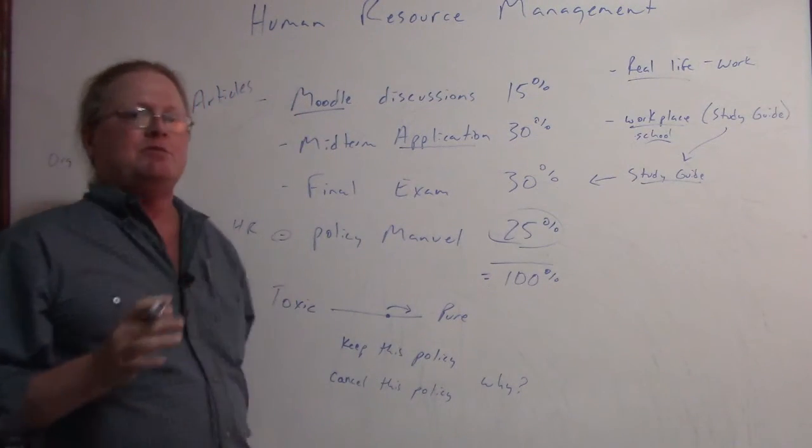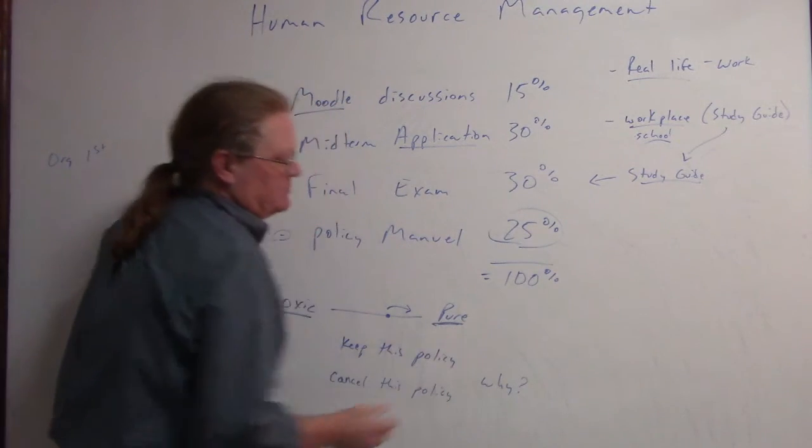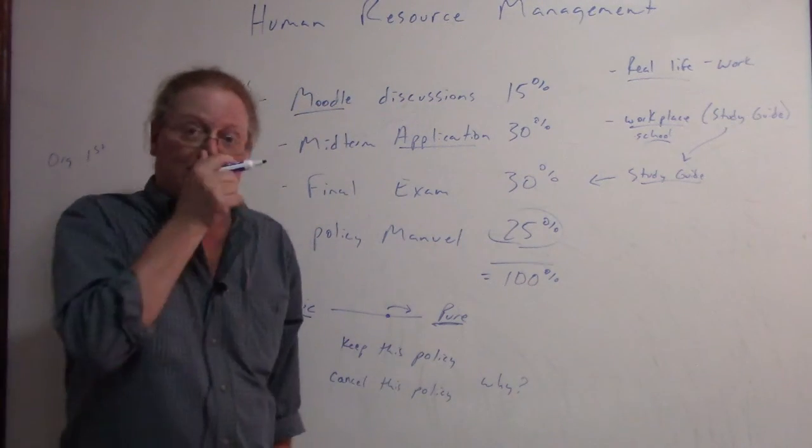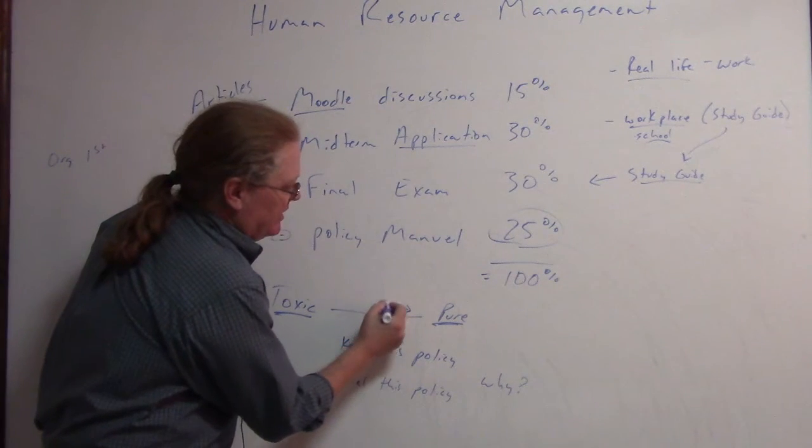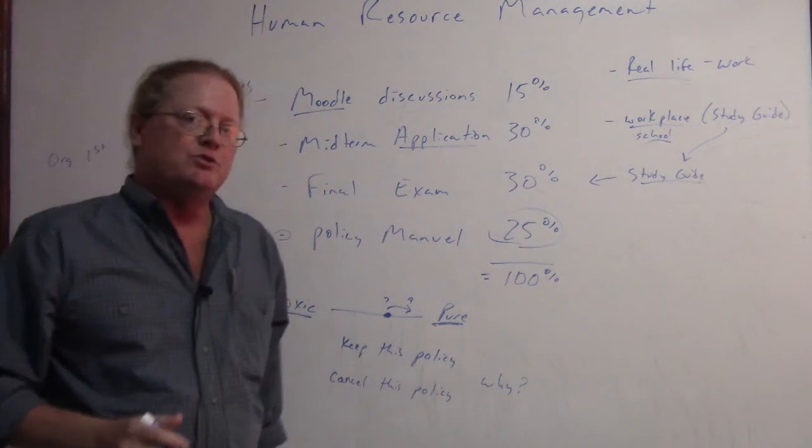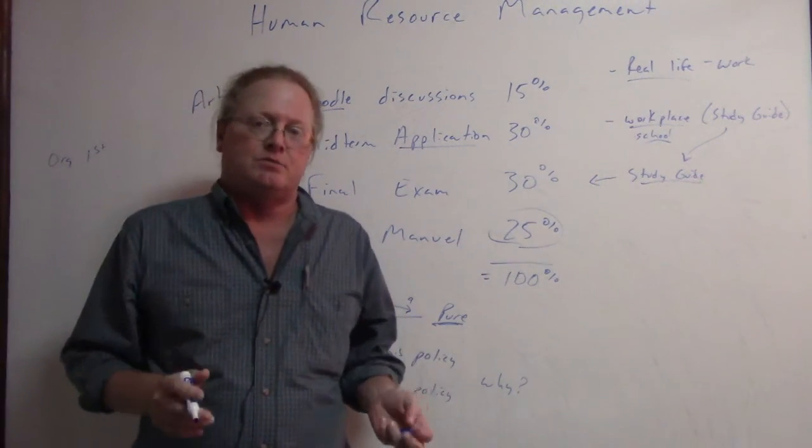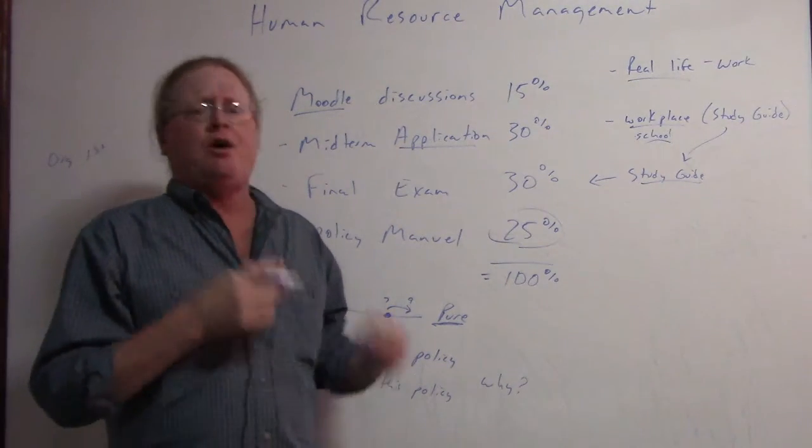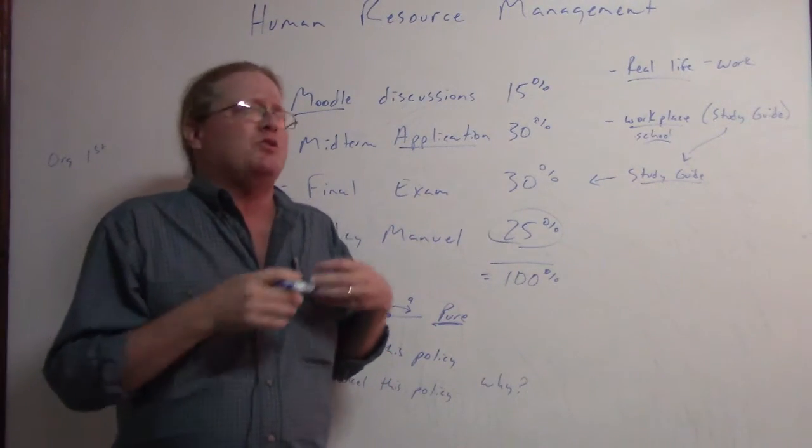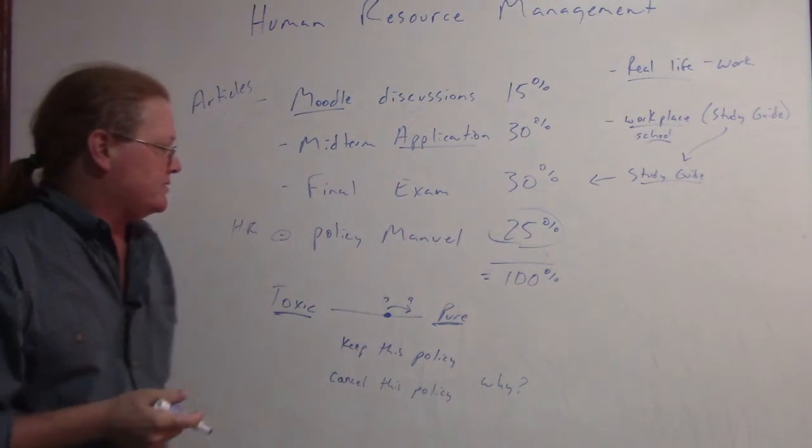But in the grand scheme of things we can look at a policy manual as being toxic or being what I call pure. And we might assess the company as being a seven and we want to get them over to a nine. Now the policy manual will tell you a lot of things about the company and their view on employees. Are they trusting or do they have no trust at all in the employees?